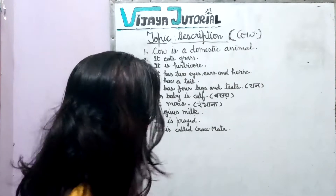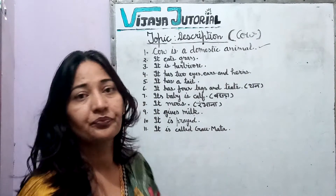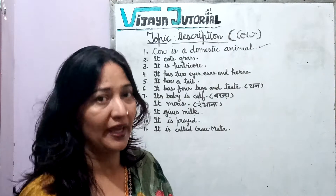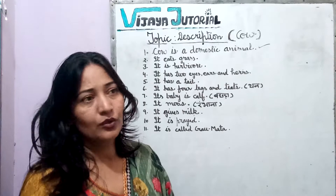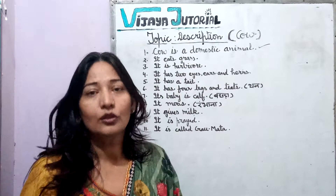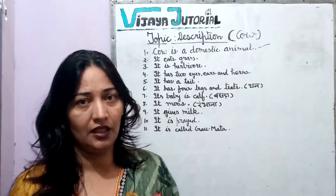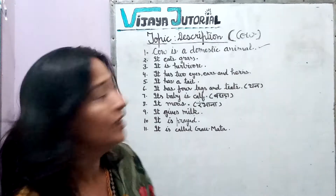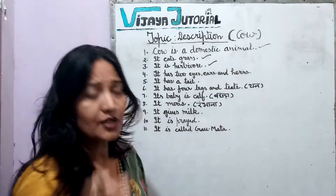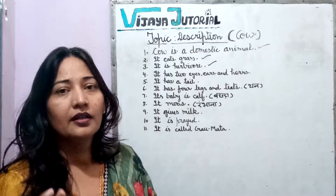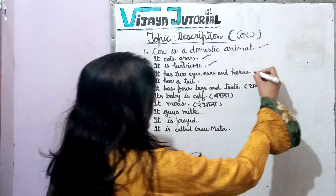First of all, cow is a domestic animal. Domestic means it is an animal that we keep at home. Cow is a domestic animal — some people say it is a pet, but it is not a pet animal, because pets are animals we keep indoors. Cow is a domestic animal. It is also a herbivore. It has two eyes, two ears, and horns.